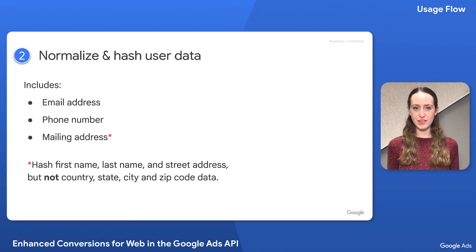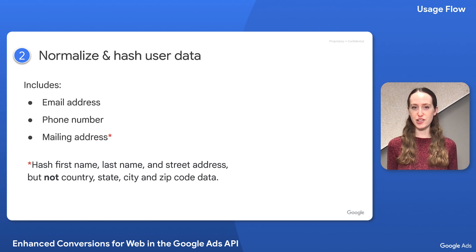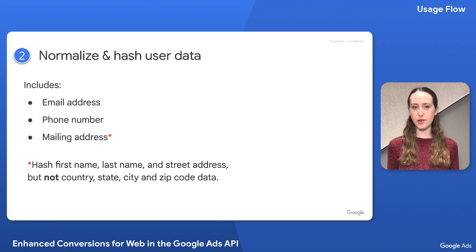With that, the first step to upload enhanced conversions for web is to normalize and hash your first-party user identifiers, which can include email address, phone number, and mailing address.